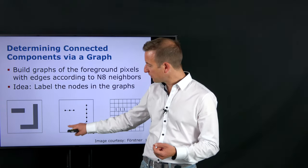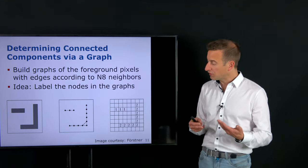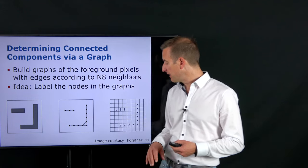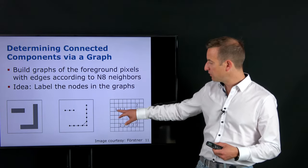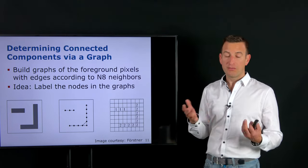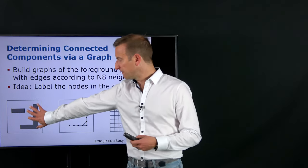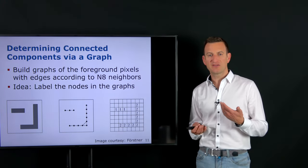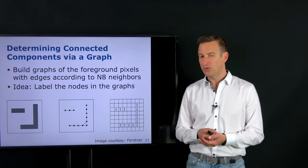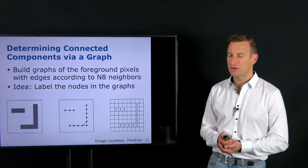The output of such an algorithm could be, for example under N8 neighborhood, component number one labeled with ones and component number two labeled with twos. The question is: how can we derive an algorithm that takes the binary image as input and outputs this component image, where we have indices for individual components and background pixels labeled as zero?